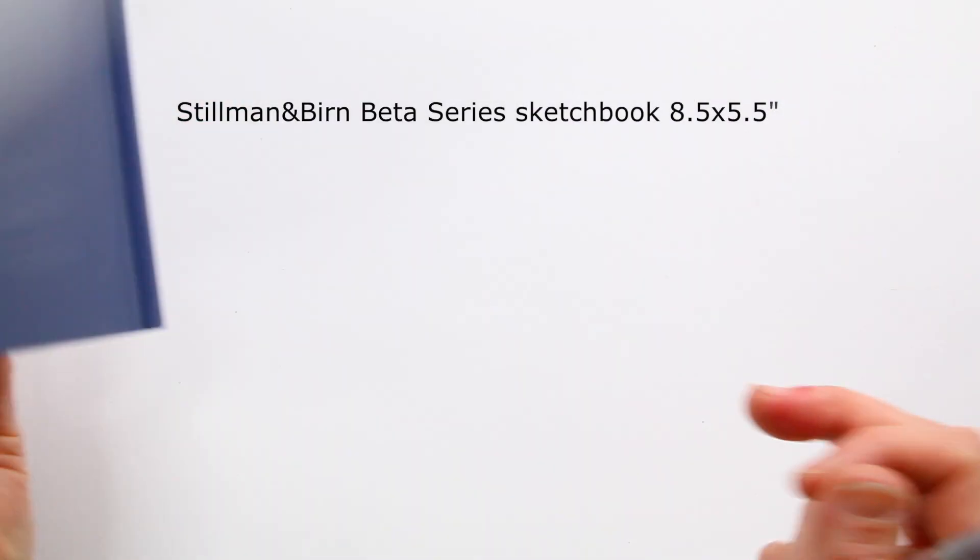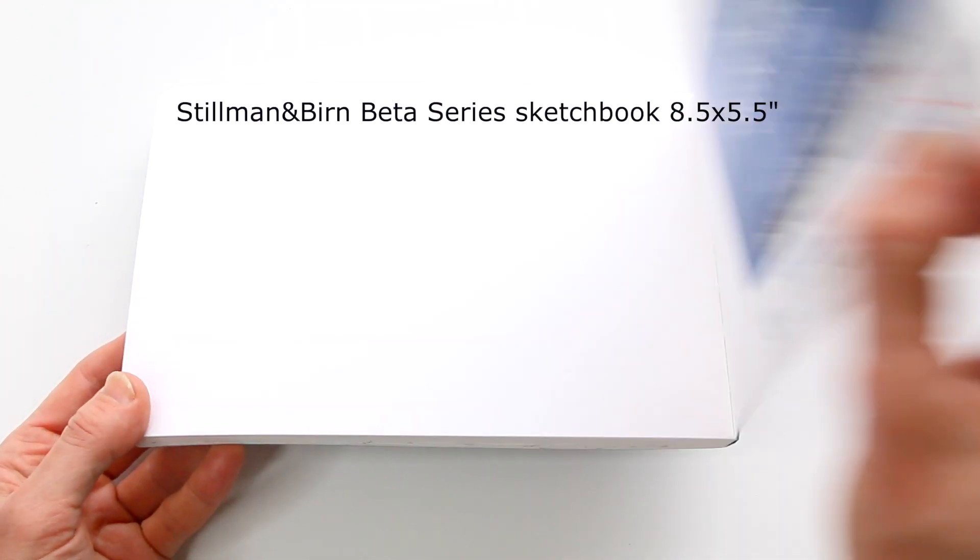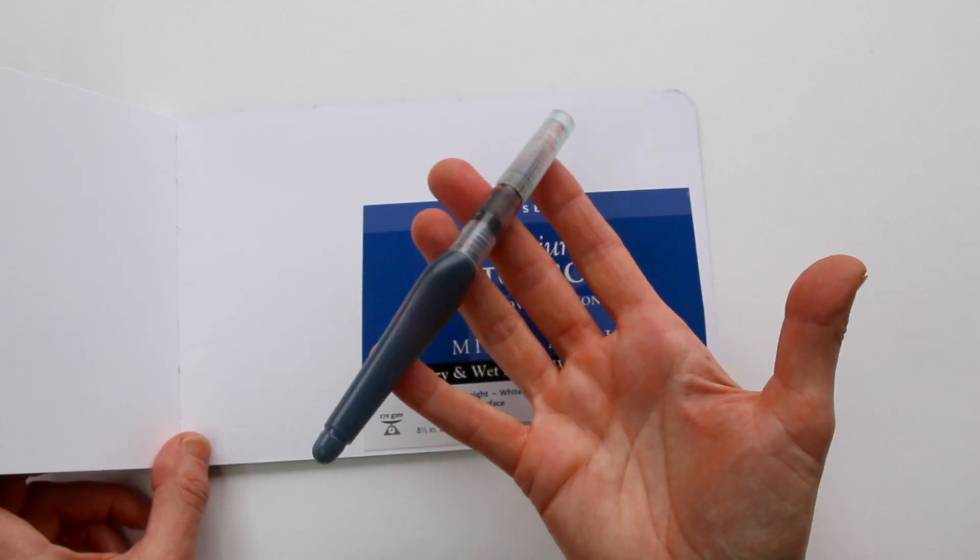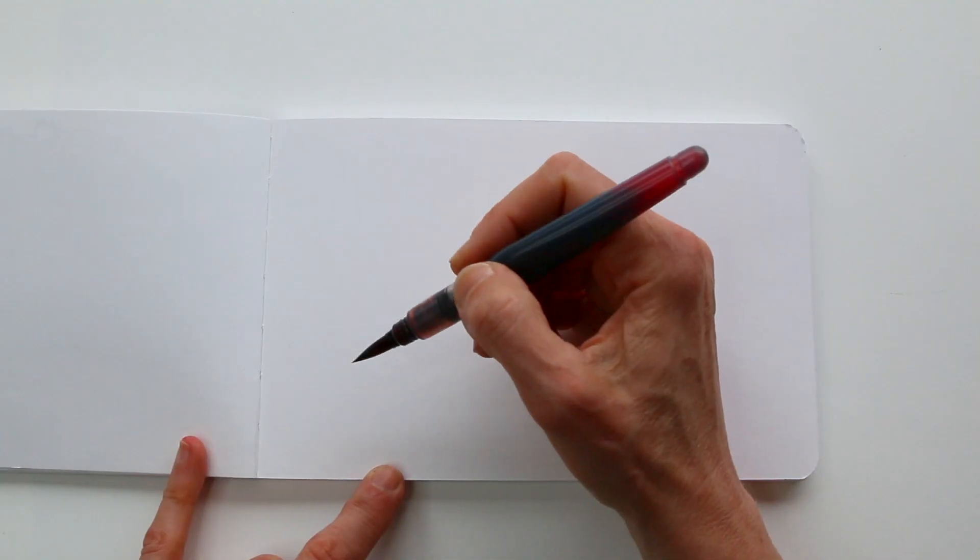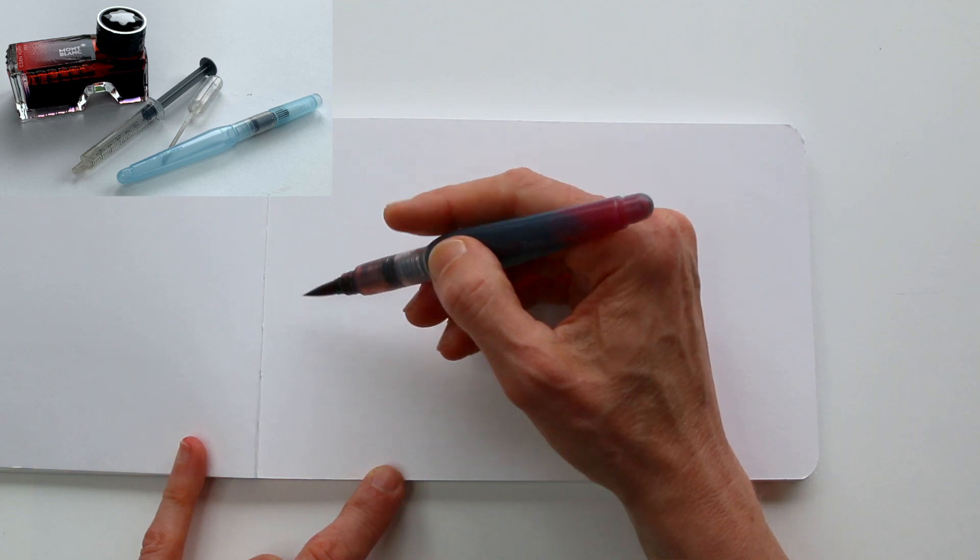I'm using a Stillman & Burns sketchbook, beta series. It's very good for mixed media, drawing, wet media, so I guess my inky business will be great for this. Okay, so I have a little bit of a still life setup, and let's see what I can do with this.